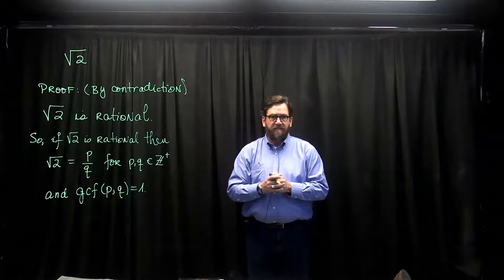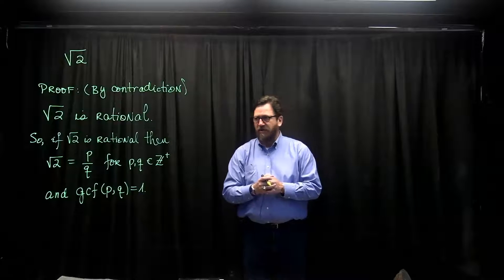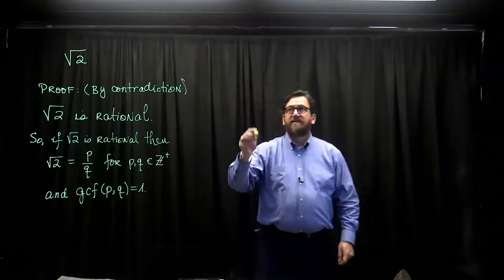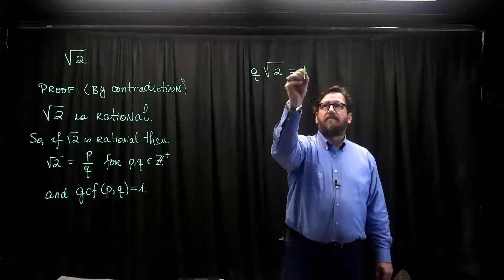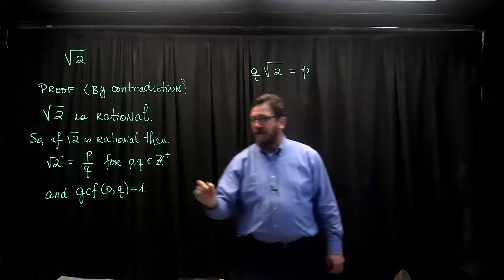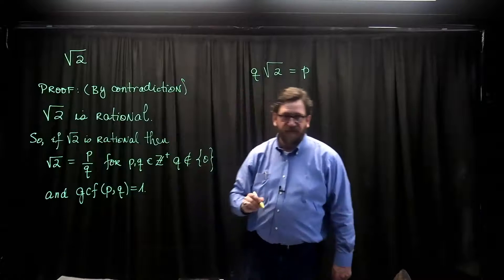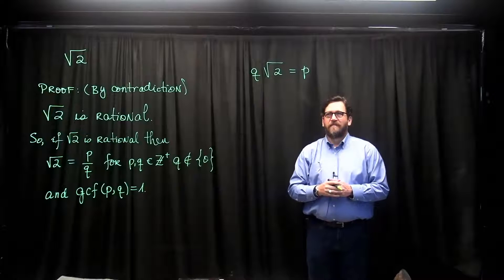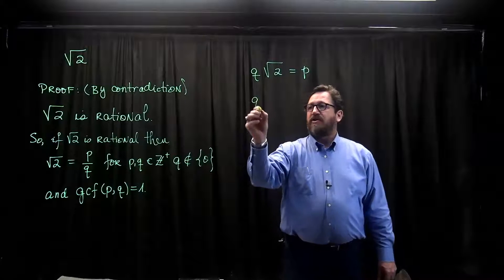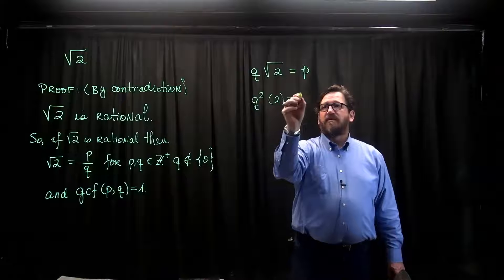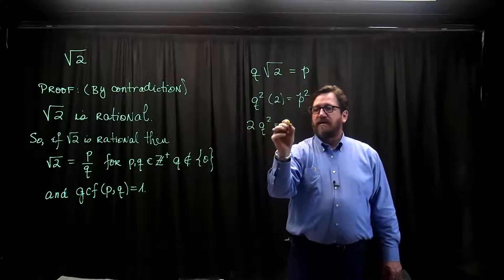With the assumption that square root of 2 is rational, we now know the square root of 2 is equal to p over q. But I don't like fractions. So what I'm going to do is I'm going to now say that q times the square root of 2 must be equal to p, simply by multiplying both sides. By the way, q cannot be zero, just in case anyone was wondering. So now I also don't like square roots, so why don't we square both sides? So I now have q squared times 2 equals p squared, which says that 2q squared equals p squared.